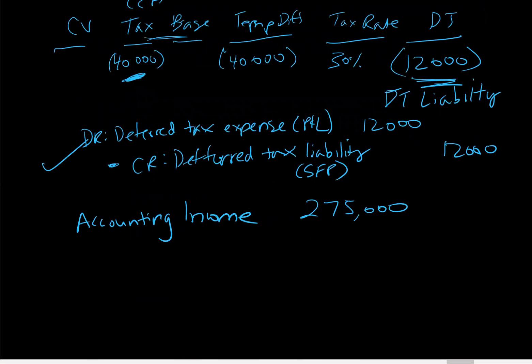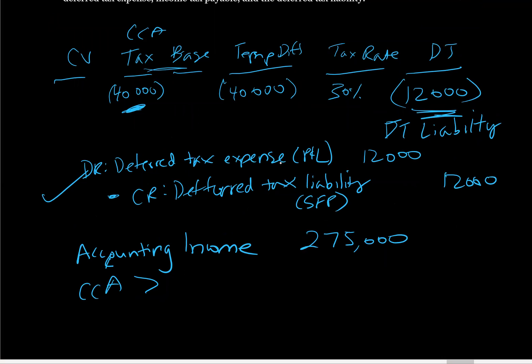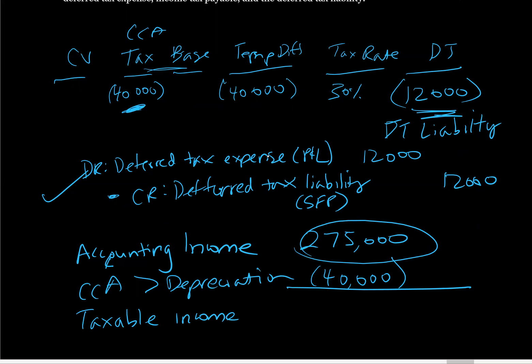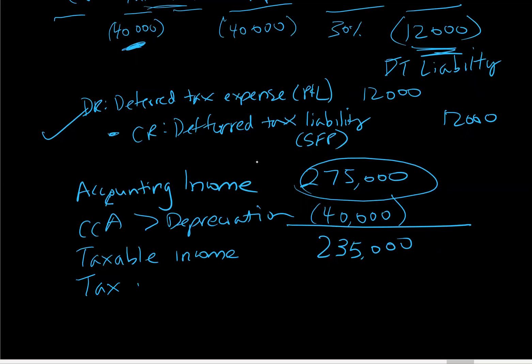So what are our deductions then for tax? Well, again, it's just the CCA. So we've got CCA, which is our depreciation for tax, that's greater than depreciation. So in this number, we would have recorded depreciation expense, but it would have been lower than what we're allowed by $40,000. So we're going to deduct $40,000 from our accounting income, bringing down our taxable income to $235,000. And then we're going to multiply that by the tax rate, which we're told is 30%, and we're going to get a current tax expense of $70,500.